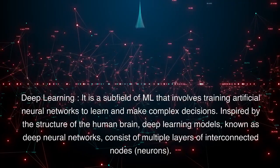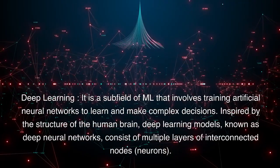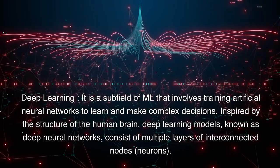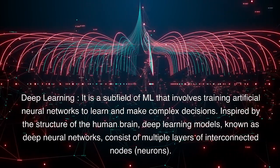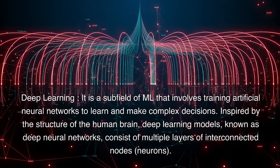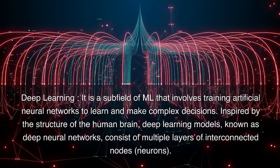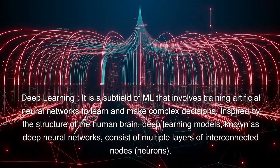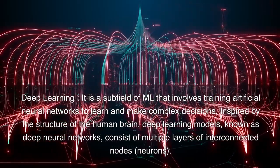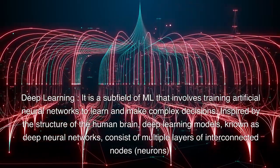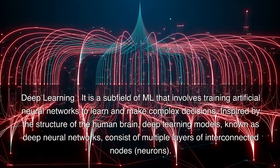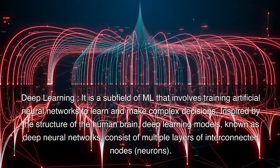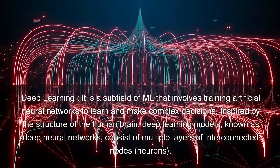Deep Learning is a subfield of ML that involves training artificial neural networks to learn and make complex decisions. Inspired by the structure of the human brain, Deep Learning models, known as Deep Neural Networks, consist of multiple layers of interconnected nodes.